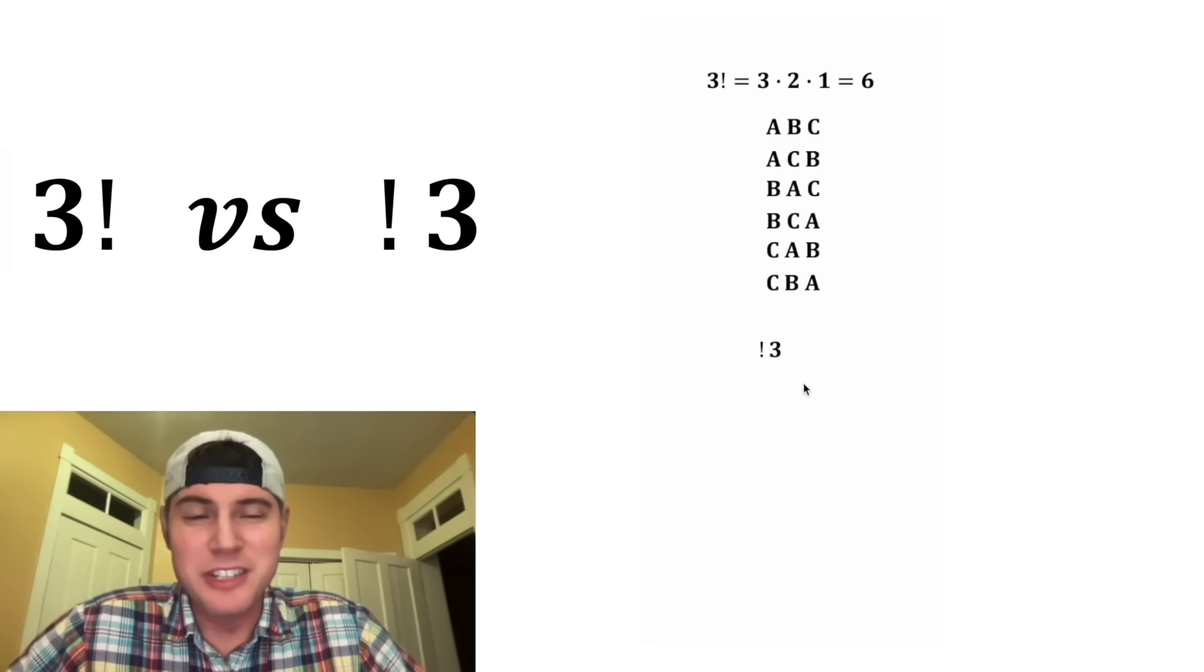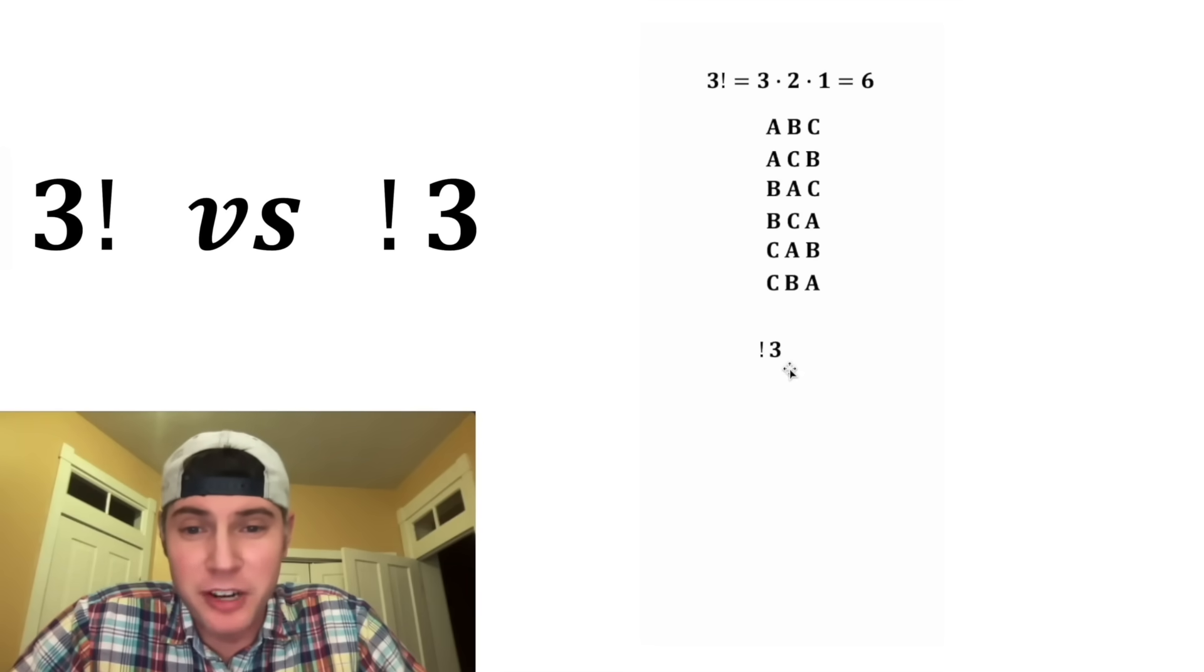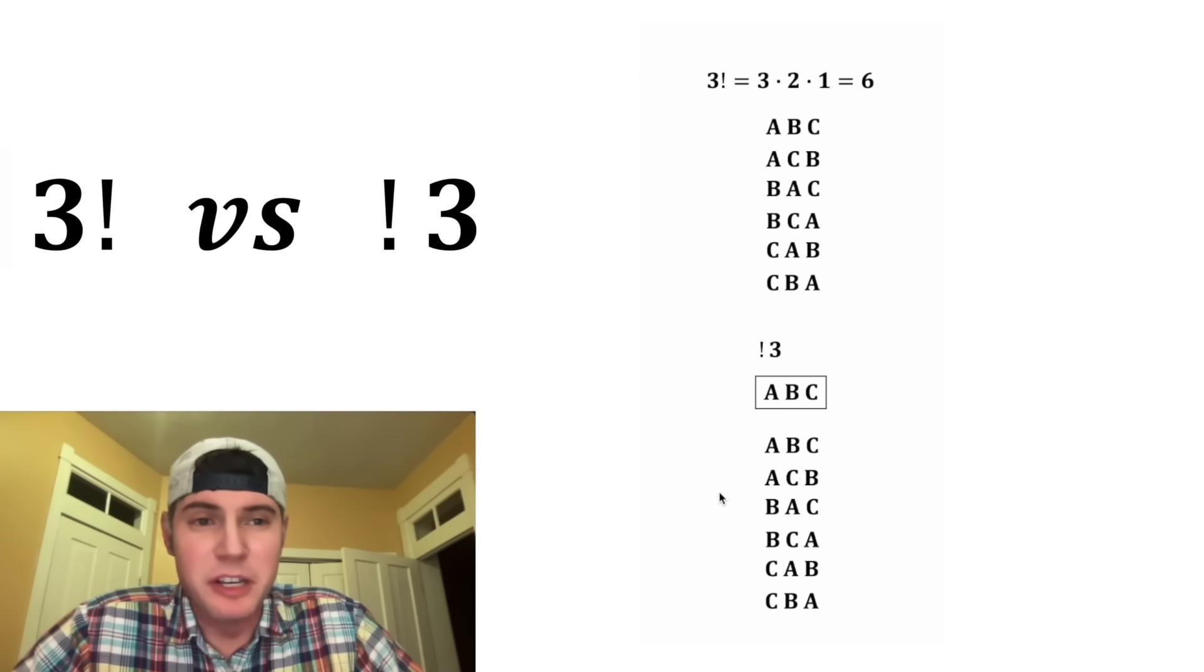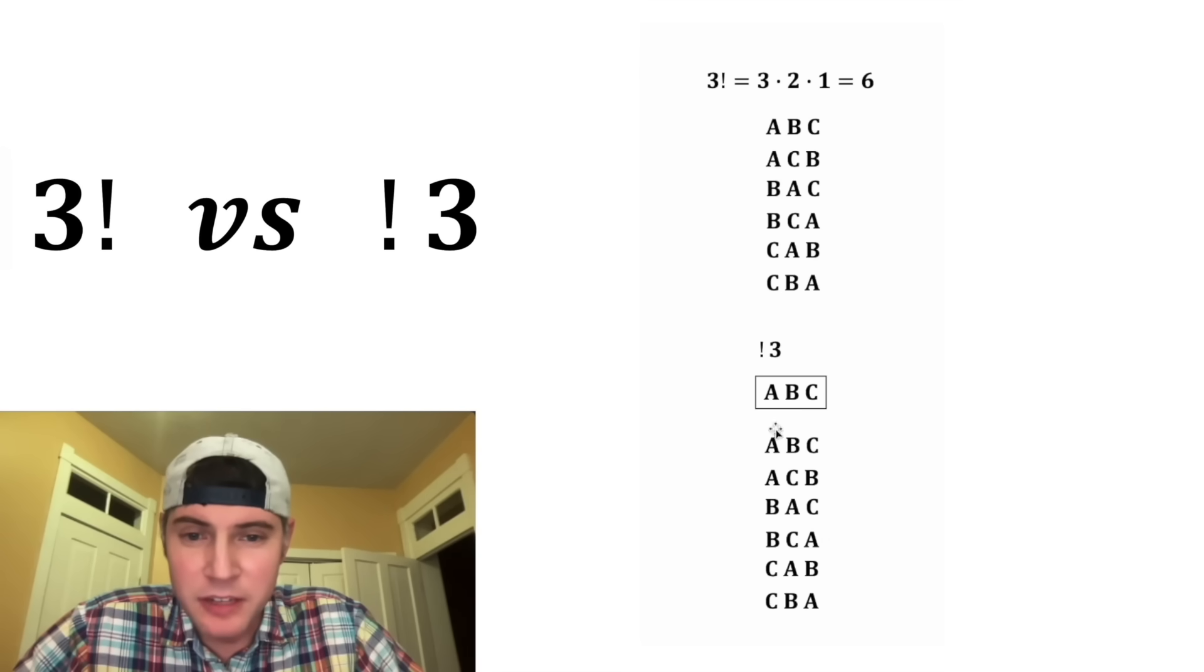Now let's talk about subfactorial 3. So with a subfactorial, once again, we would have 3 objects. So we want to look at the different ways we can arrange them, but then we're going to get rid of some of these. Any time where any of these objects are in the same place they were when we started, we want to exclude those.